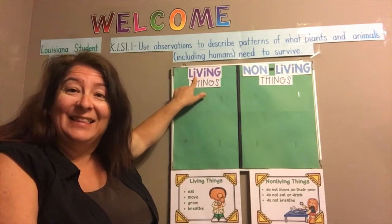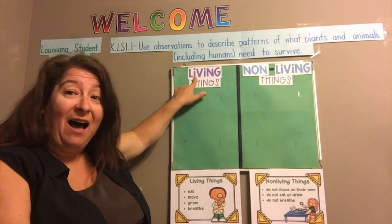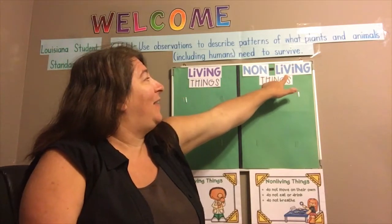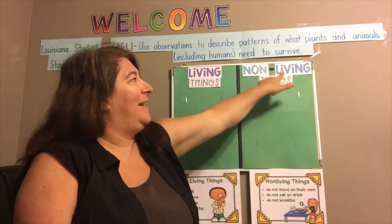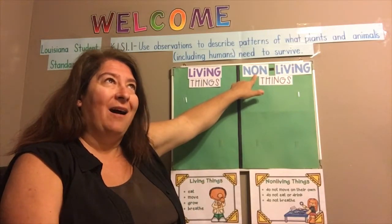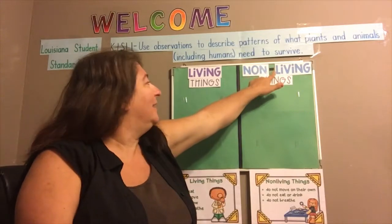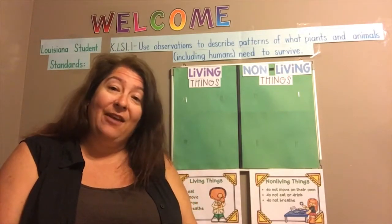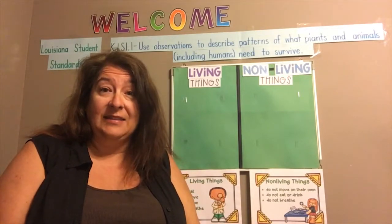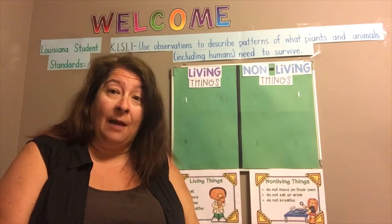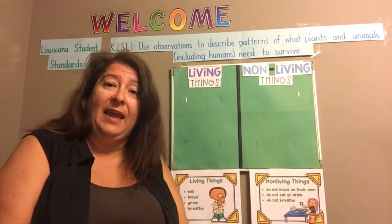A living thing is something that is alive. So if we look at the word non-living things — non means not. So non-living things are not alive. Now let's look at the characteristics of living things and non-living things, so we can decide if an object is a living or non-living thing.